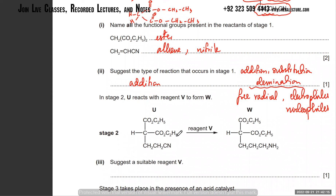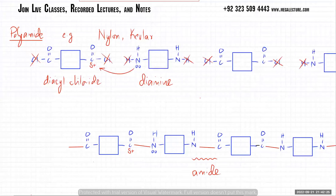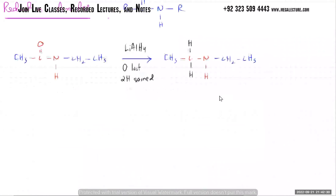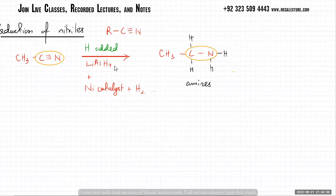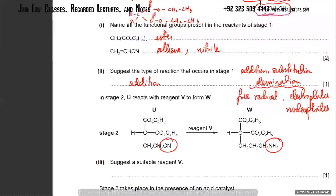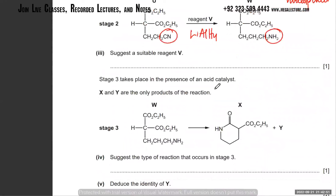Suggest a suitable reagent B. The nitrile is changing into NH2 - how do you change a nitrile into NH2? That's a reduction. How do you turn a nitrile into NH2? You add LiAlH4, or you add H2 with a nickel catalyst. So reagent B is LiAlH4.